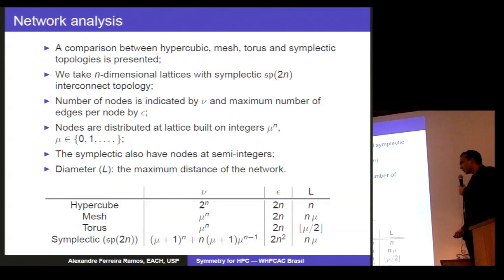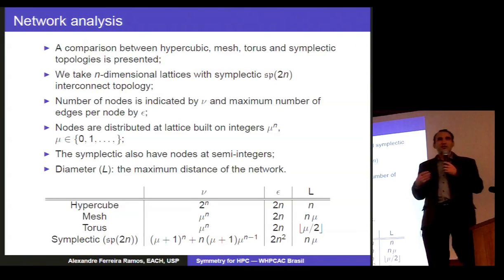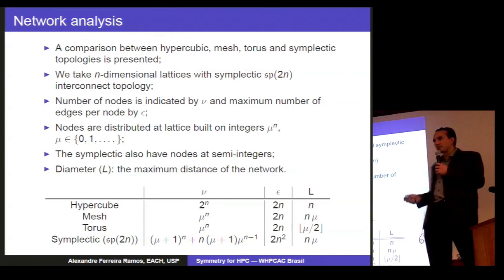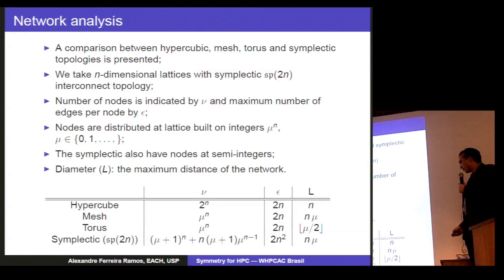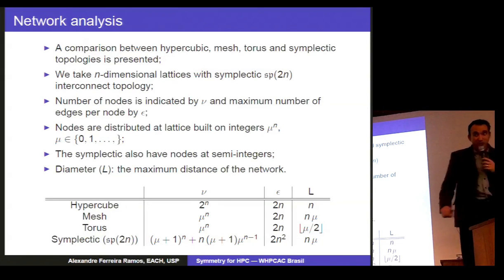The symplectic 2n has a slightly different number of nodes. It has a big advantage. For the symplectic topology, each node is going to communicate to 2 times n to the power of 2. It increases by a factor n the maximum number of edges or nodes communicating to each other. This is a good strategy to increase the communication. And the diameter will be comparable to the mesh topology. Of course, if we make a torus, we would reduce this maximum distance by half. But that is straightforward.